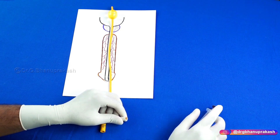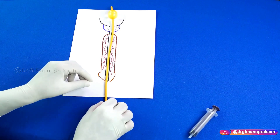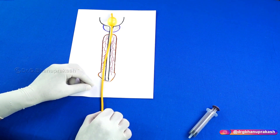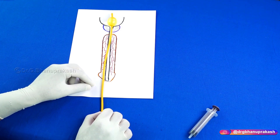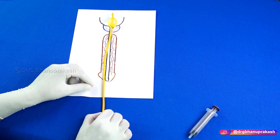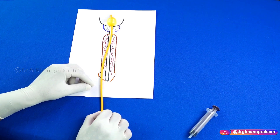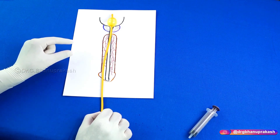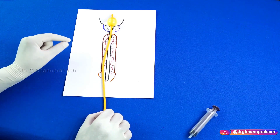After inflating the balloon, slowly pull the catheter down. The catheter cannot come down below the urinary bladder because the neck of the urinary bladder is obstructed by the inflated balloon — this is how the Foley's catheter is secured in place.